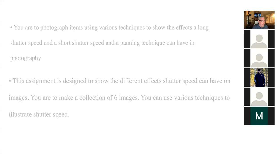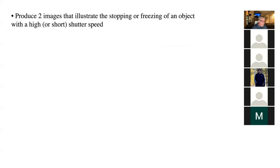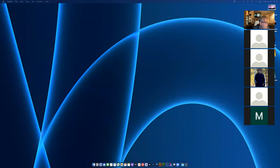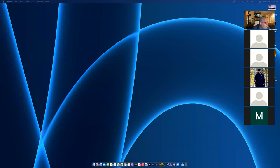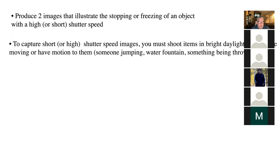Part one: produce two images that illustrate the stopping or freezing of a subject. To capture short or fast shutter speed images, you must shoot items in bright daylight that have motion to them - someone jumping, a water fountain, something being thrown. If you have a regular camera, put it on S. If you have a Canon, put it to TV.